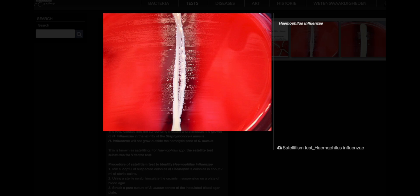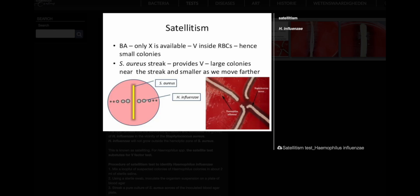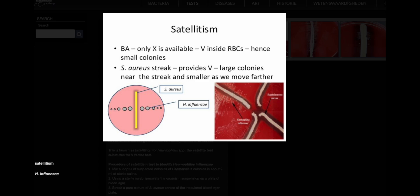Observation and Interpretation of the Satellitism Test: The suspected colonies are likely Haemophilus influenzae if growth is observed on the blood agar plate and the colonies near the Staphylococcus aureus streak are larger than those further away.